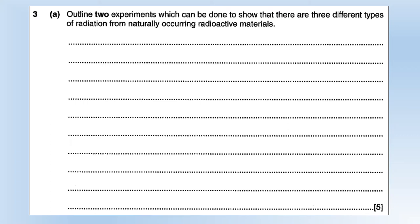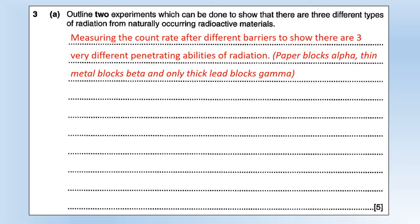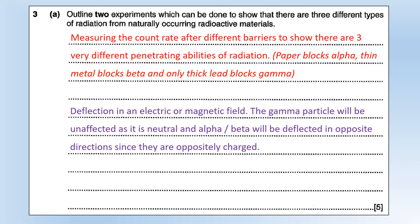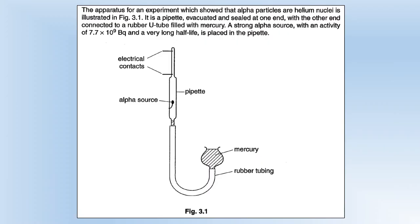Moving on to question 3: outline two experiments which can be done to show that there are three different types of radiation from naturally occurring radioactive materials. The first one is very commonly known: using different barriers to show there are three different penetrating abilities of radiation. Paper blocks alpha, thin metal blocks beta, and only thick lead can block gamma. The other type would be if we use either an electric or a magnetic field, because gamma particles are neutral so they will be unaffected by the field, and alpha and beta have opposite charges so they'd be deflected in opposite directions. The magnetic field method is in fact one of the first ways that the three types were identified and given the names alpha, beta, and gamma for the first three letters of the Greek alphabet.